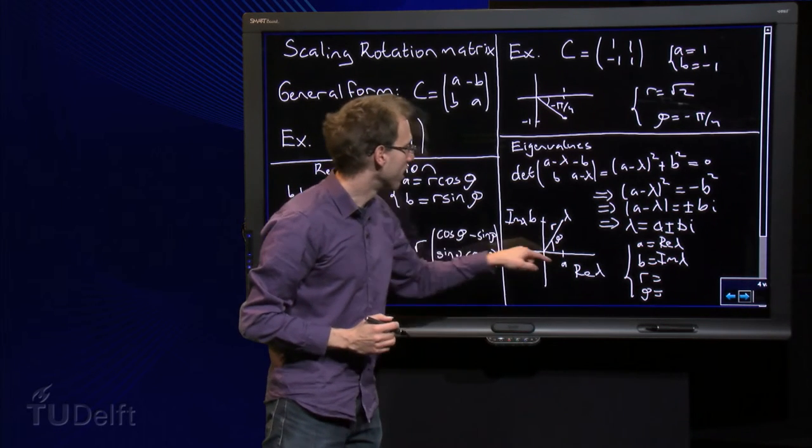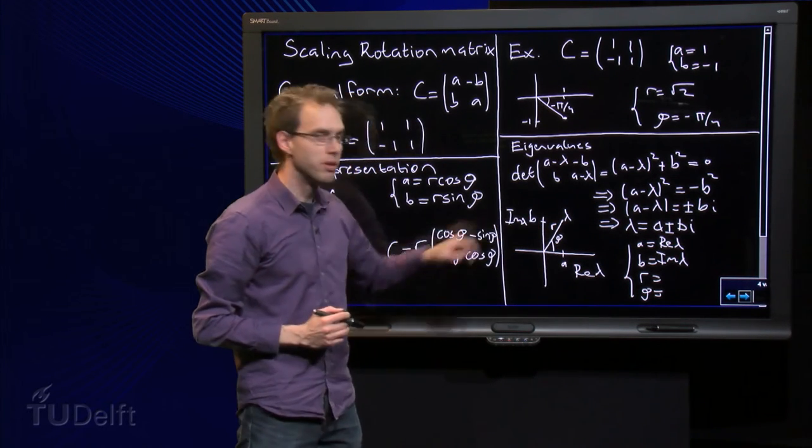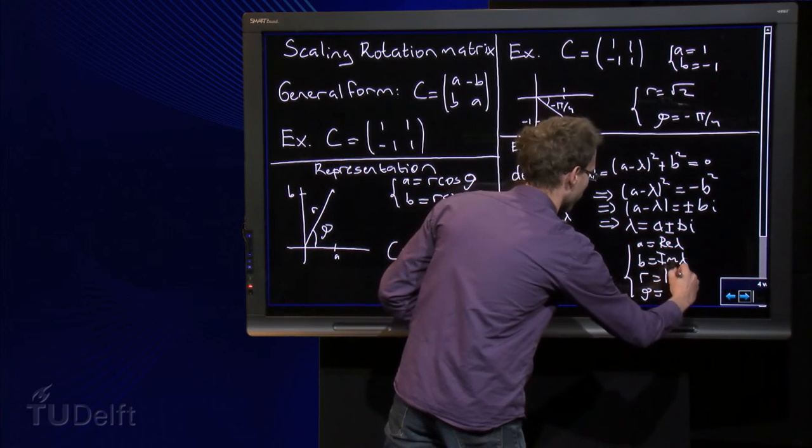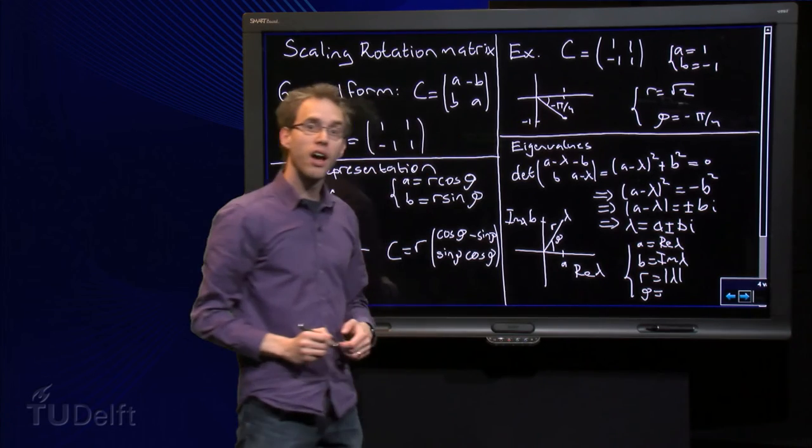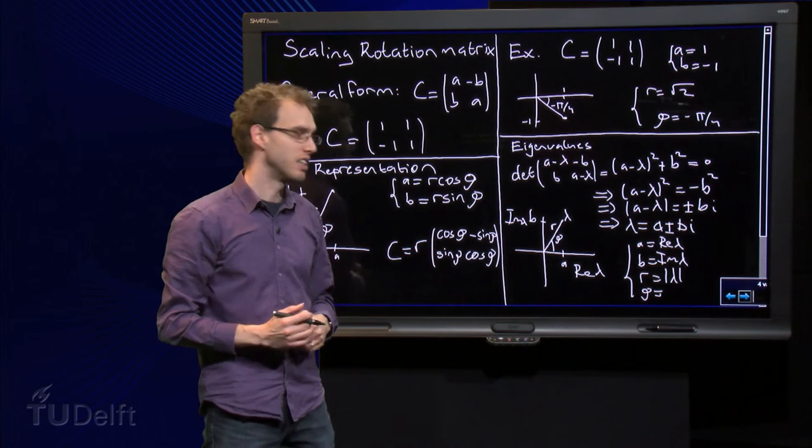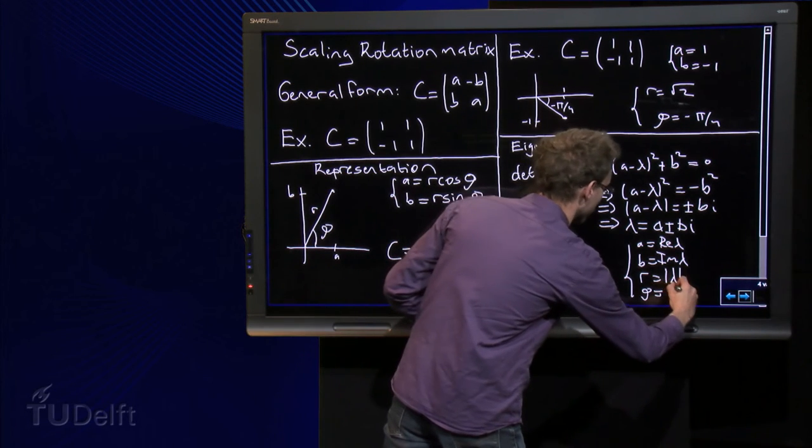Moreover, we know R is the distance from lambda to the origin, so that is the modulus of lambda, and phi is the angle with the positive x-axis, also known as the argument of lambda.